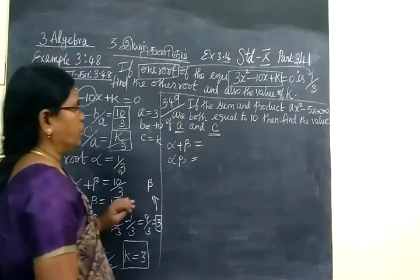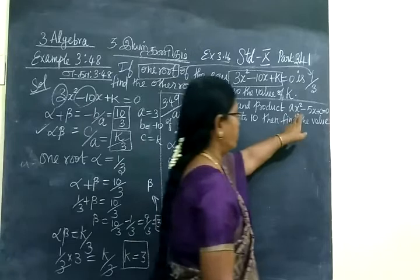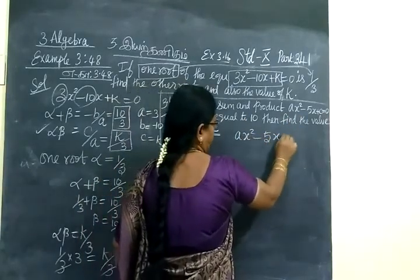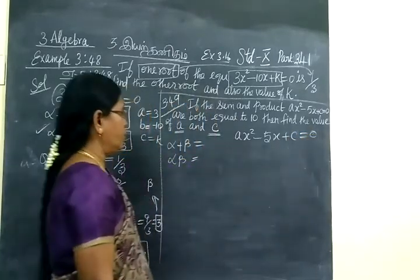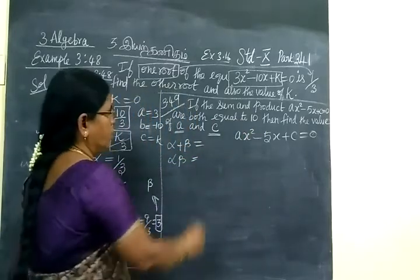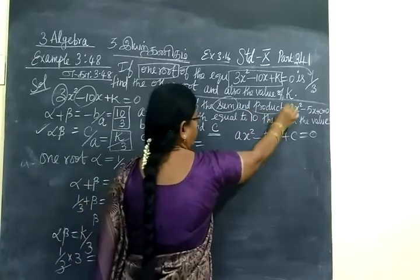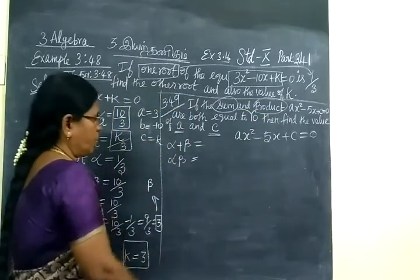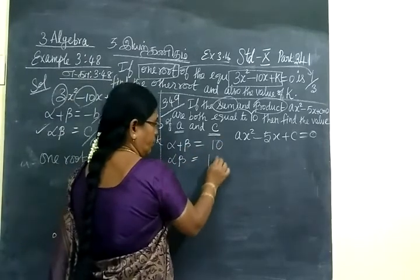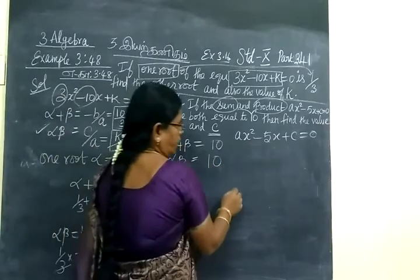It will come under two-mark questions. Next, Example 3.49 is given: if the sum and product of the roots of the quadratic equation ax² minus 5x plus c equals 0 are both equal to 10, that means sum of the roots equals 10 and product of the roots also equals 10.